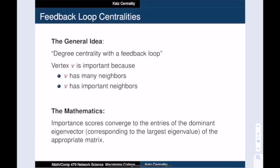Here is a high-level summary of the previous videos. We are looking at definitions of centrality that are like degree centrality with a feedback loop. In other words, a vertex can be important because it has many neighbors, or a vertex can be important because its neighbors are important. Using the wonders of linear algebra, we find that these importance scores converge to the entries of the dominant eigenvector of a particular matrix.